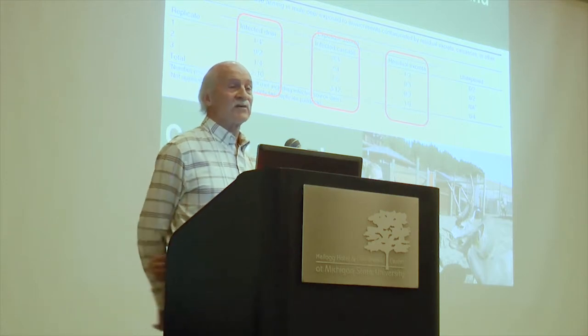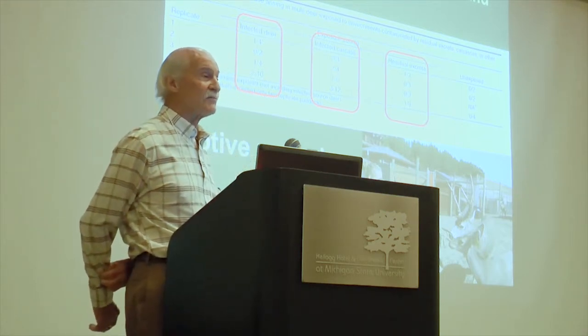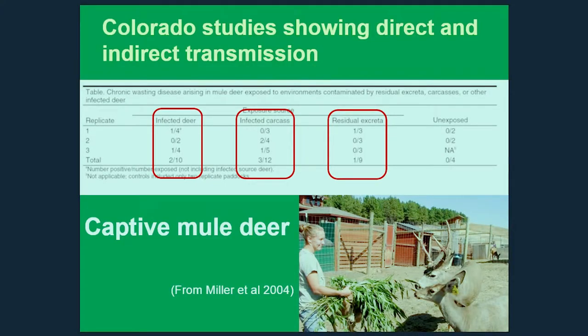We know that animals are infected by both direct and indirect routes from pen studies done by Mike Miller in Colorado. If animals were placed with infected deer, two of ten became infected. With infected carcasses, three of twelve became infected. And if placed in pens with just residual excreta — urine and feces in highly contaminated pens — those deer became infected as well. Unfortunately, this is just a pen study, so how well it replicates what happens in the real deer world is still subject to considerable uncertainty.